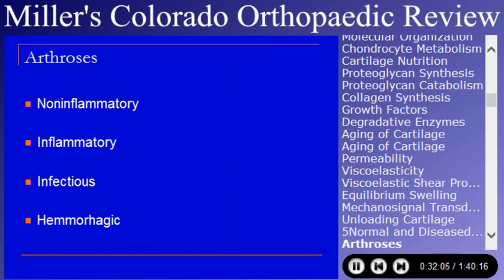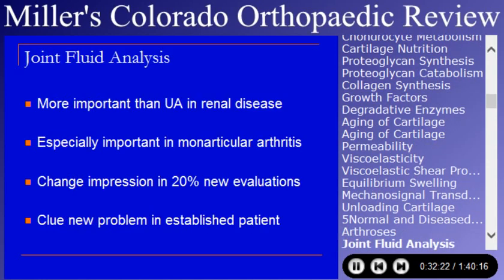Now to clinical entities: arthritis and arthroses. Joint fluid analysis is important — you will get asked questions on it regularly, almost always involving infection or gout. Someone has said analyzing joint fluid is more important than a urinalysis in evaluating renal disease. It's especially important in monoarticular arthritis to be sure you don't miss an infection. In rheumatology practice, joint fluid evaluation may change the clinical impression in as many as 20% of patients.